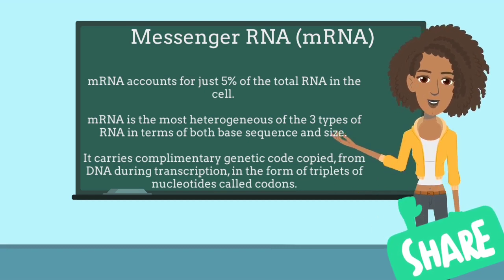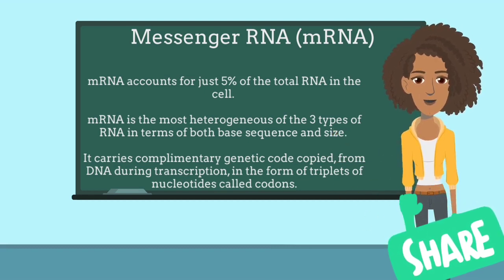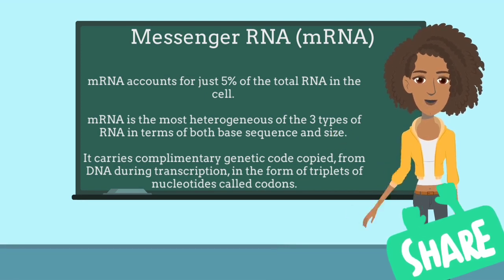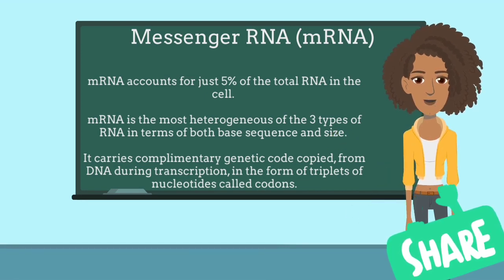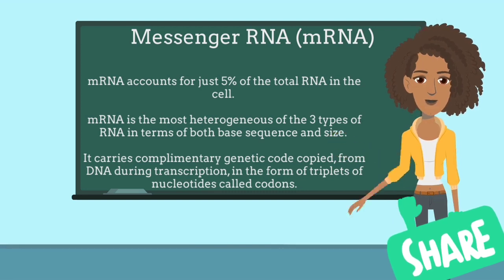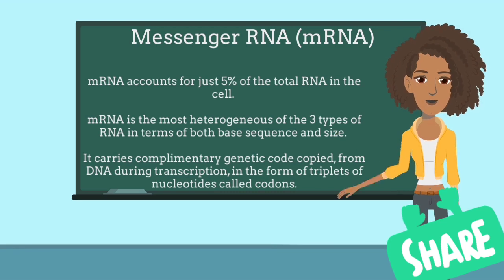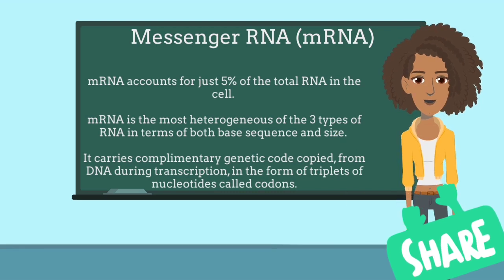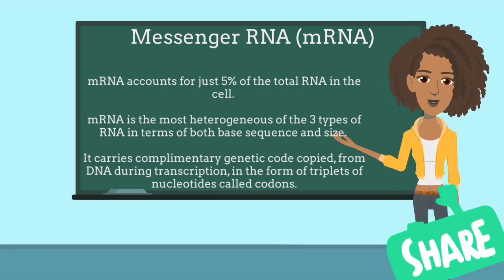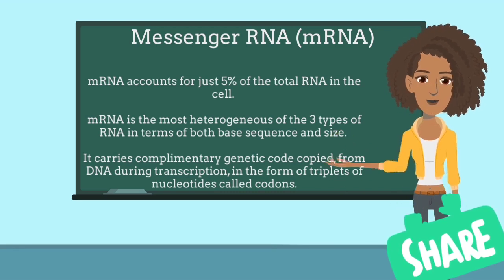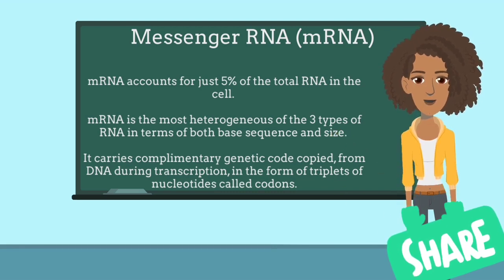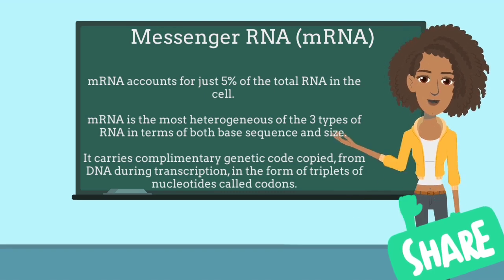Each codon specifies a particular amino acid, though one amino acid may be coded for by many different codons. Although there are 64 possible codons or triplet bases in the genetic code, only 20 of them represent amino acids. There are also three stop codons, which indicate that ribosomes should cease protein generation by translation.